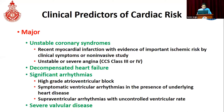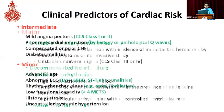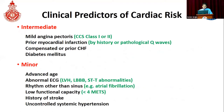The major clinical predictors of cardiac risk include patients with unstable coronary syndrome such as recent myocardial infarction with post-infarction angina, unstable angina, or severe chronic stable angina of CCS class 3 and 4. Decompensated heart failure, significant arrhythmias including AV blocks and symptomatic ventricular tachyarrhythmias, and severe valve disease are also categorized as major predictors. Intermediate predictors include mild angina pectoris of class 1 to 2 and history of myocardial infarction detected by pathological Q waves on ECG.